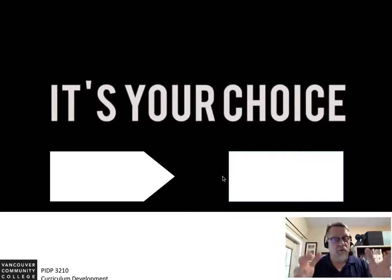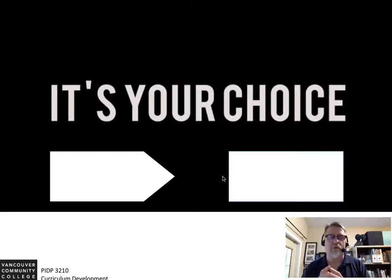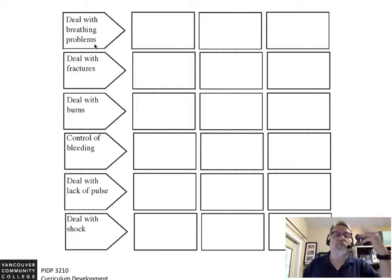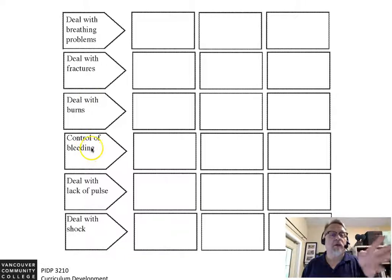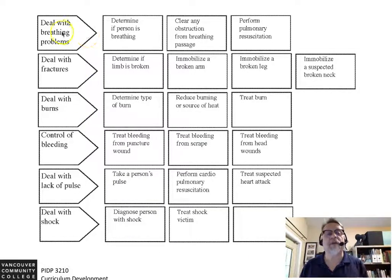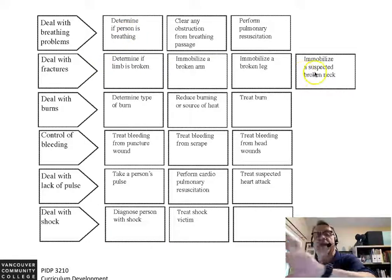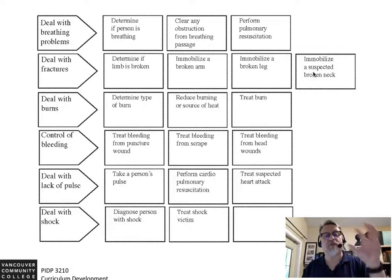Which ones do you write first — all the goals or all the objectives, or can you go back and forth? It really is your choice. There are best practices and procedures you can follow, but if you were to do the goals first it might look something like this: dealing with breathing problems, fractures, burns, controlling bleeding. Then following along, dealing with breathing problems: determine if a person is breathing, clear any obstruction, perform pulmonary resuscitation. Notice the sequence — you wouldn't perform pulmonary resuscitation before determining whether the person is breathing. There's often a sequence involved.